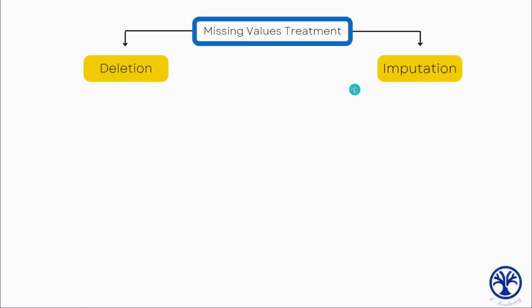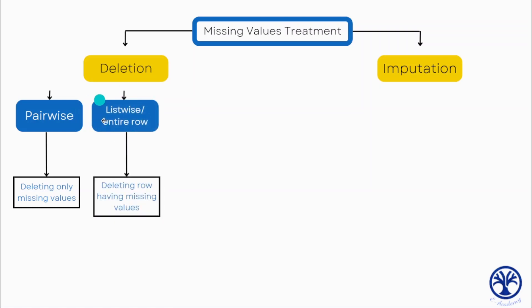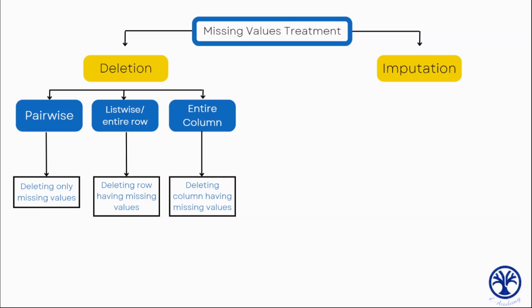For deleting missing data, there are basically three approaches. The first is pairwise deletion—only delete those values that are null. The second is listwise deletion—deletion of the entire row. And the third is to delete the entire column that has missing values.